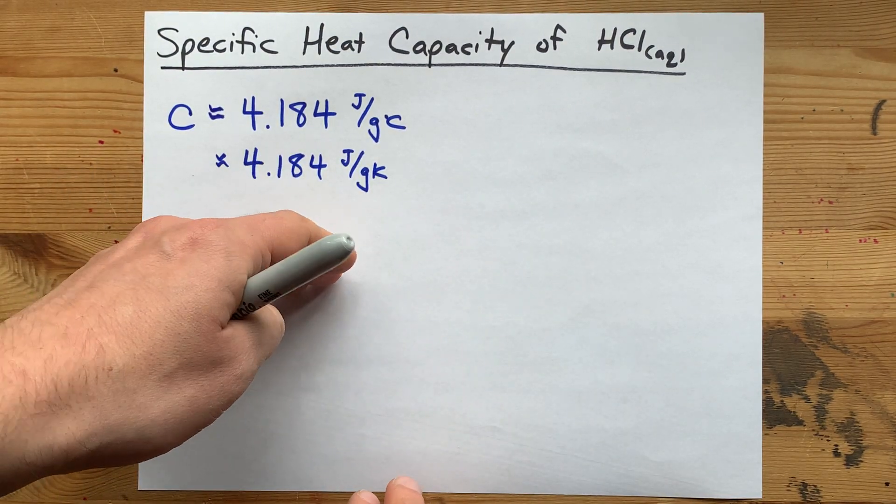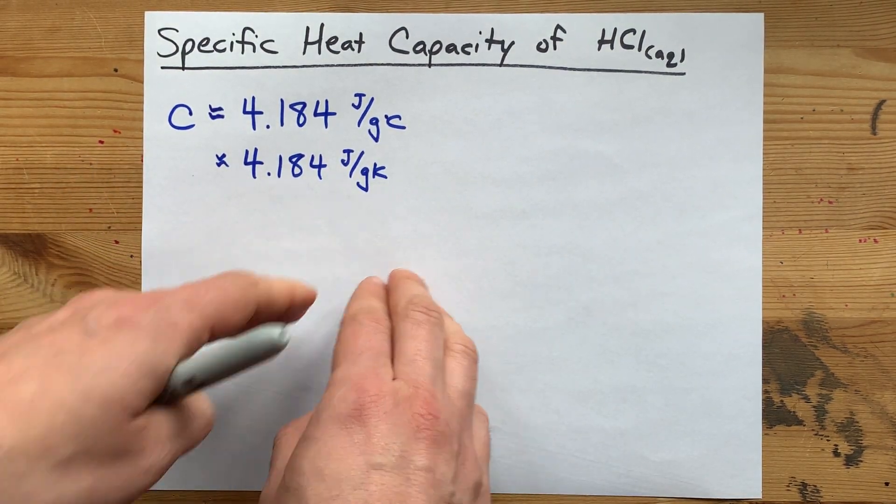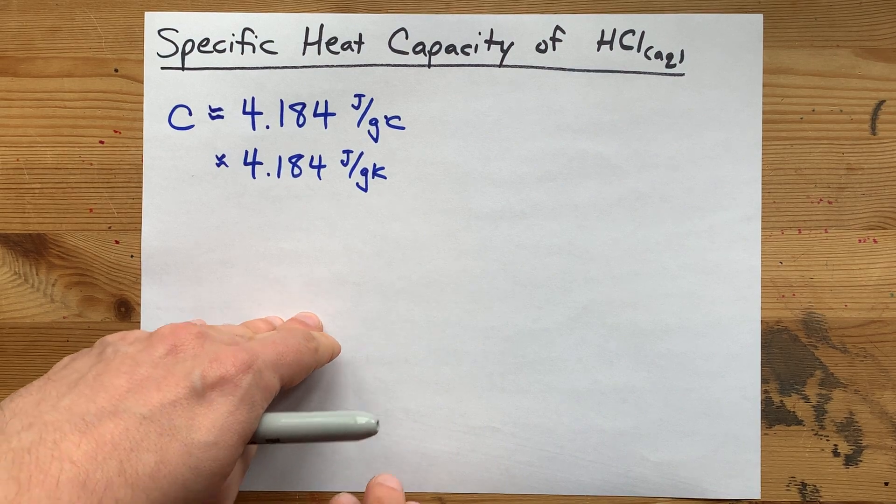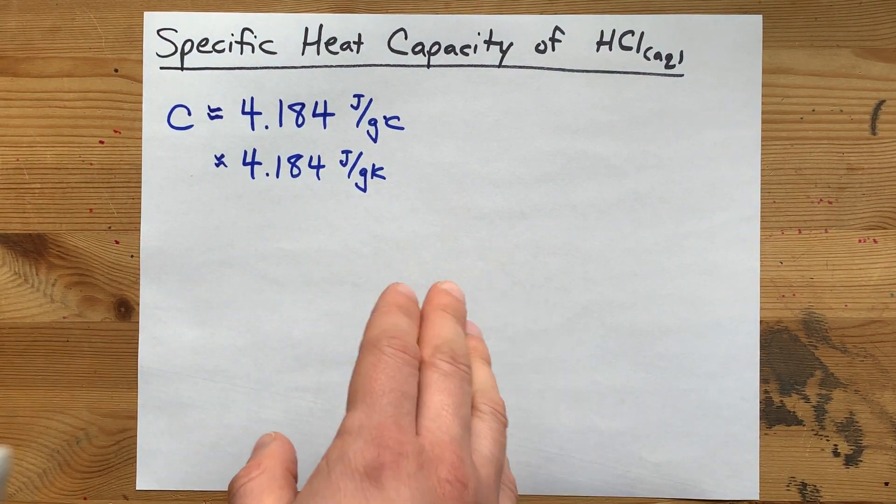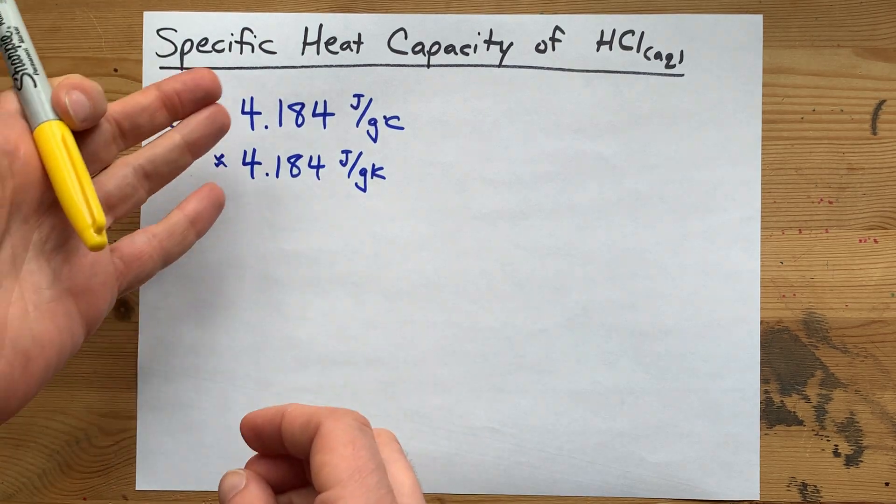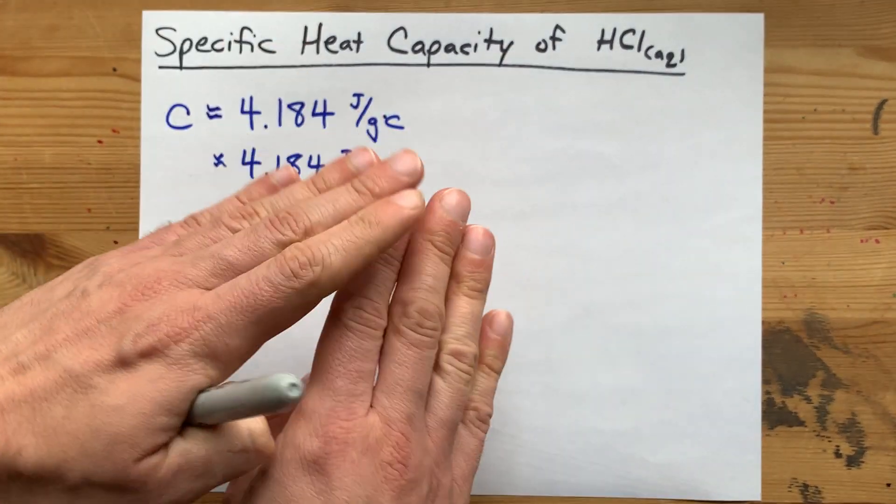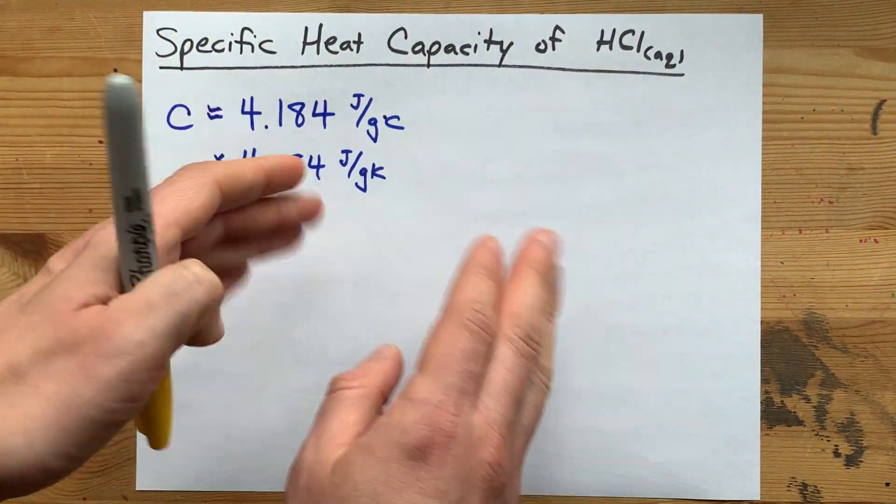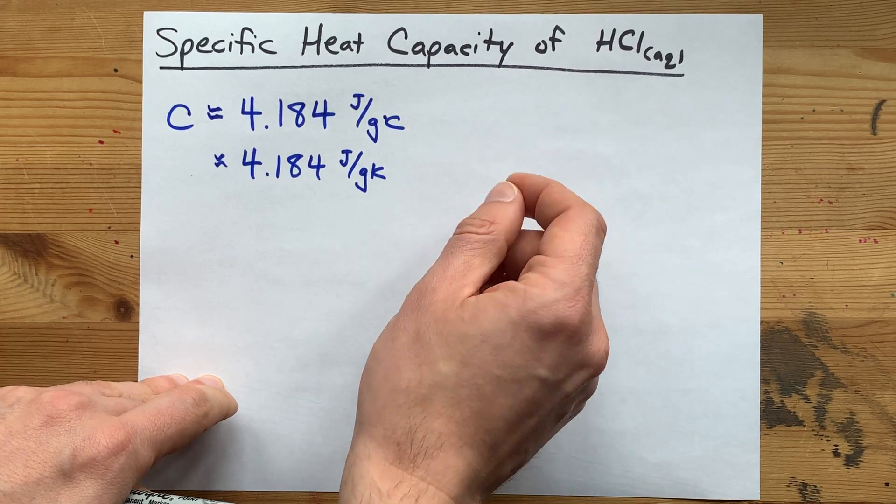it has like this vapor pressure boiling point at this concentration and this vapor pressure and boiling point at this concentration. And all those concentrations are like 20%, 30%. You're never probably in your life going to work with 100% hydrochloric acid.